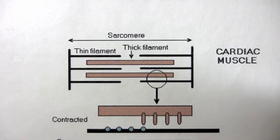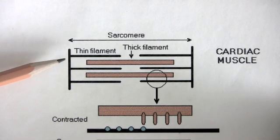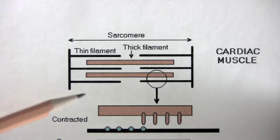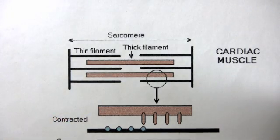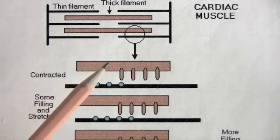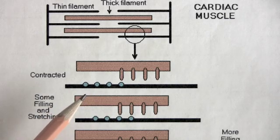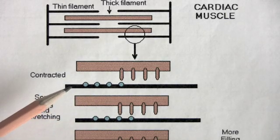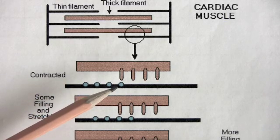Let's look at cardiac muscle. Cardiac muscle also has the same molecular design — thin filaments, thick filaments, sarcomeres. Let's enlarge the thick filament and the thin filament. At the end of systole, the thick filaments and the thin filaments are quite overlapped — this is the state after contraction. Notice in this case, one cross bridge is bound to a binding site.